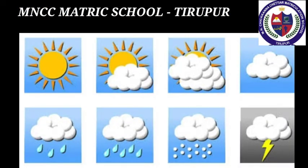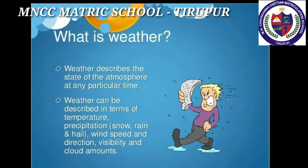Weather is the day-to-day conditions of the atmosphere at any place as regards sunshine, temperature, cloud cover, wind, fog, air pressure, humidity and precipitation and such other elements. It refers to short periods like a day, a week, a month or a little longer.